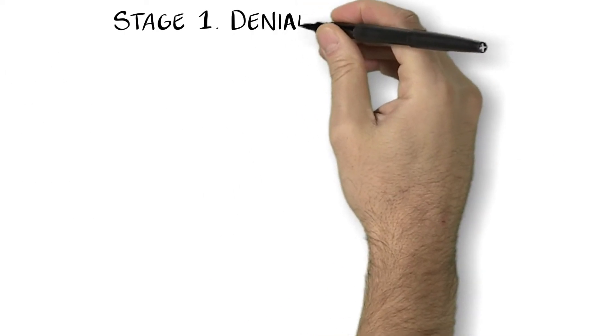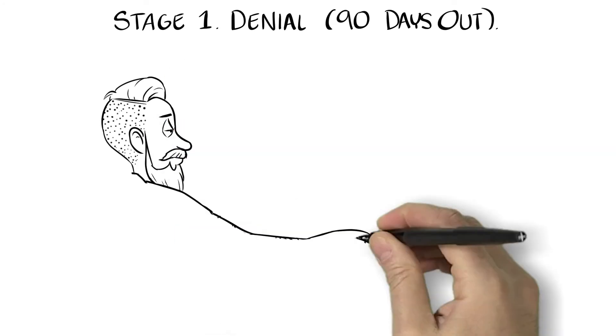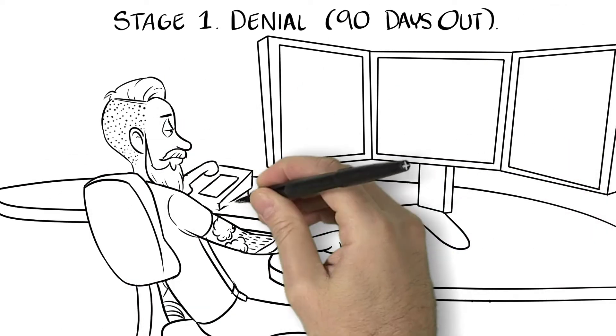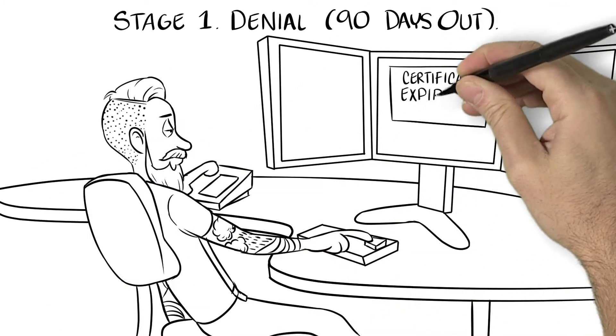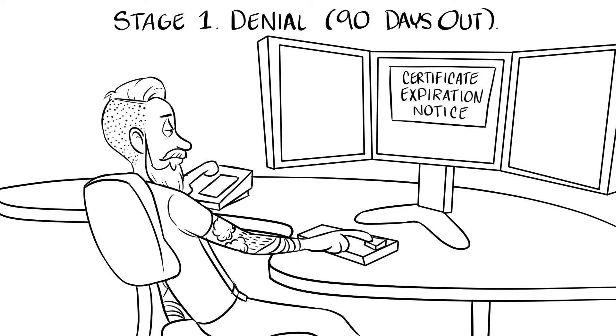Stage 1. Denial. There it is burning a hole in his inbox, the dreaded certificate expiration notice. But not his problem, right? He can just delete the thing.